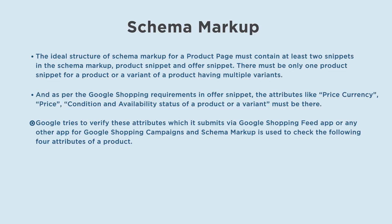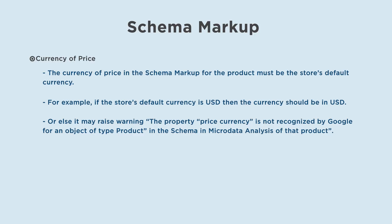Google tries to verify these attributes which it submits via Google Shopping Feed app or any other app for Google Shopping campaigns. Schema markup is used to check four attributes of a product. The currency of price in the schema markup must be the store's default currency. For example, if the store's default currency is USD, then the currency should be in USD, or else it may raise a warning that the property priceCurrency is not recognized by Google.